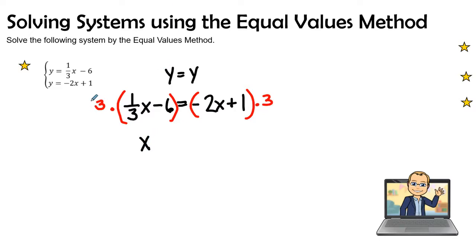Also, I could say that this 3 cancels out with this 3, leaving me left over with 1. But I have to distribute to both sides, both terms in the parentheses. So 3 times negative 6 is negative 18. Therefore, I also have to distribute to both terms, and 3 times negative 2x is negative 6x, and 3 times positive 1 is positive 3.